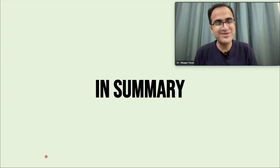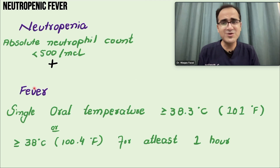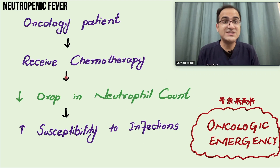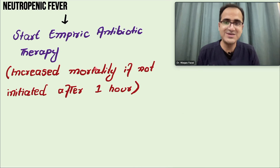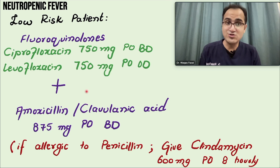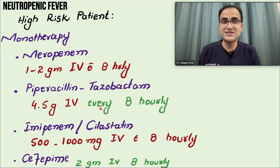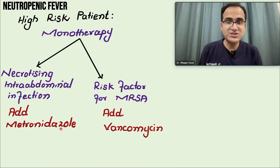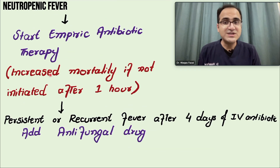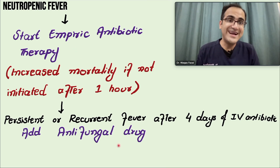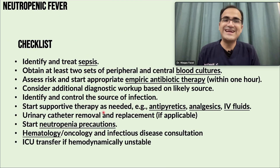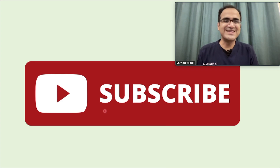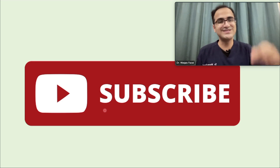In summary, neutropenic fever is an oncologic emergency. Do the MASCC score, stratify the patient as high or low risk, take blood samples, and start empiric antibiotic therapy. Low risk patients receive oral antibiotics at home; high risk patients receive IV antibiotics and are admitted. Add antibiotics to monotherapy for additional infection sources. Add antifungal therapy if not responding after four days. Avoid rectal temperature checks, follow isolation precautions, and use the checklist whenever a patient with neutropenic fever presents.